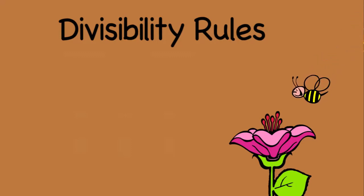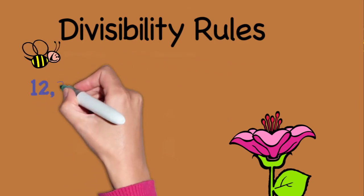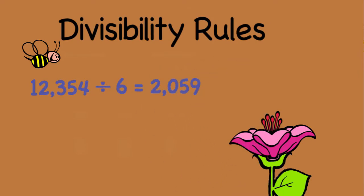Let's look at divisibility rules. When we say a number is divisible by another number, we mean that if we divide a whole number by another whole number, the result will be a whole number.